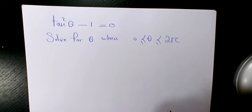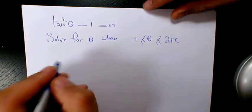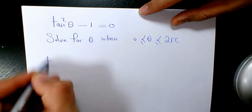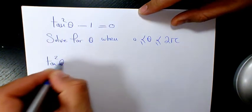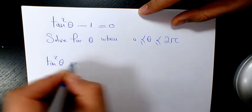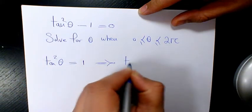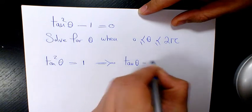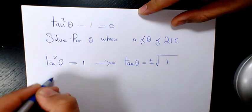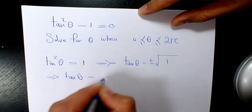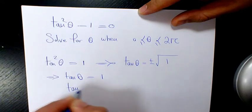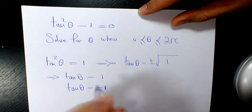θ is between 0 and 2π. So how we're going to solve it? tan²θ - 1 = 0 means that tan²θ = 1, so tan θ equals plus or minus square root of 1, which will be tan θ = 1 or tan θ = -1.